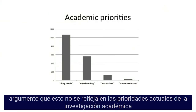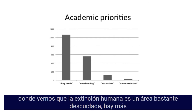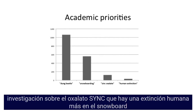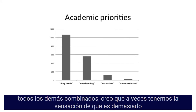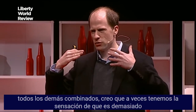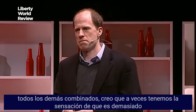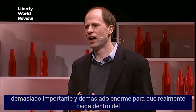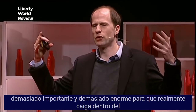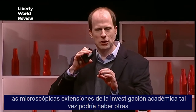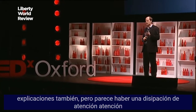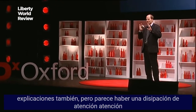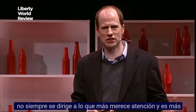This is not reflected in the current priorities of academic research, where human extinction is a rather neglected area. There is more research on zinc oxalate than there is on human extinction, more on snowboarding than on zinc oxalate, and much more on the dung beetle than all of the others combined. It seems that we have a sense that the topic is too big and too important, and there seems to be a misallocation of attention — attention is not always directed to what is most deserving.